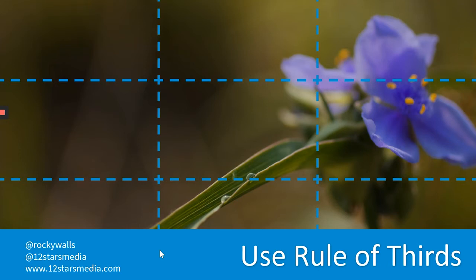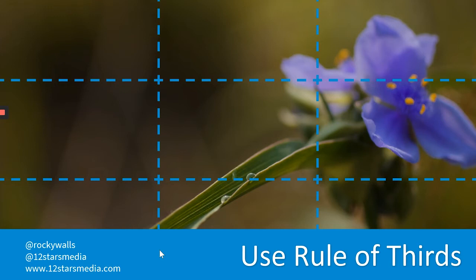This goes back to something I was talking about earlier. If we just shoot everything centered — kind of how we approach life, with everything right in the middle — that's our default. If I told you to go out and take a picture of the spider wort, your first inclination might be to center it in the frame. There's nothing inherently wrong with that, but the rule of thirds tells us that to add interest and variety, we can frame things so the interesting part of our picture or video falls on the cross-sections of those third lines.